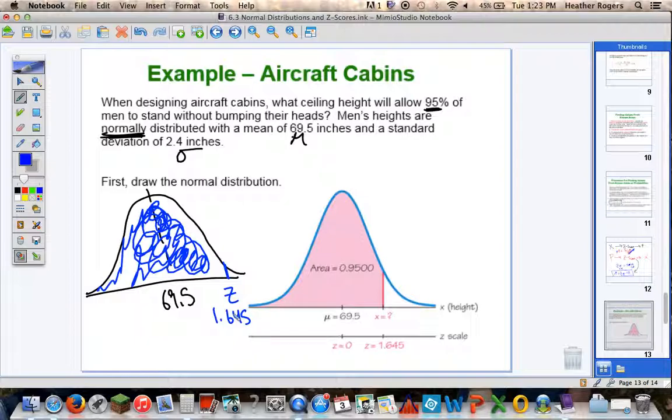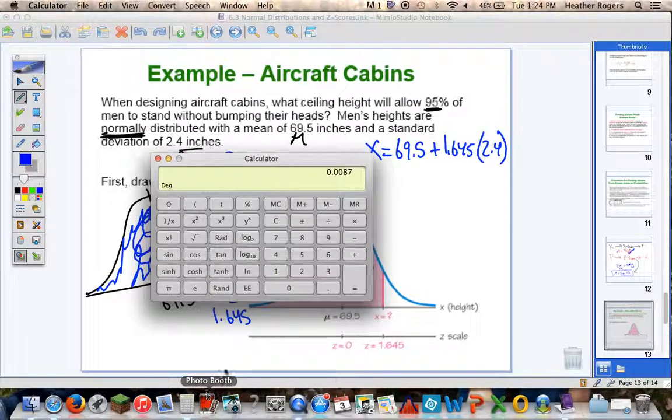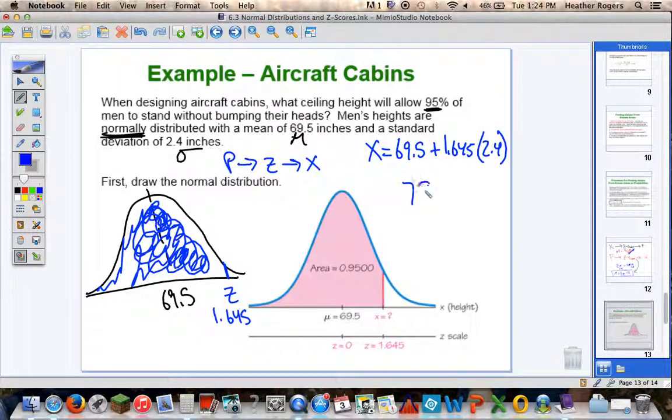1.645 is not my answer. That's not how many, how tall. That's just my Z-score. So, I've gone from a probability to a Z-score. Now, I need to go ahead and find my X-value. So, my X-value is my mean plus my Z-score times my standard deviation. So, I get my calculator out. 1.645 times 2.4 plus 69.5 and we get 73.448 inches.